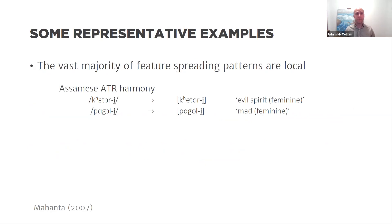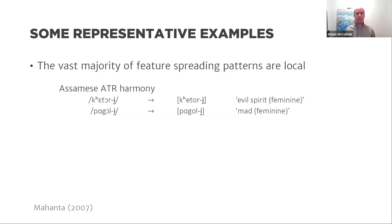The vast majority of feature spreading patterns are local. Here's an example of regressive ATR harmony from Assamese. The plus-ATR vowel /e/ in a suffix triggers leftward spreading, affecting mid vowels in the roots. In the first example, harmony spreads iteratively to the left, turning both mid minus-ATR vowels to plus-ATR. In the second example, a low vowel is unaffected — it has no harmonic counterpart in Assamese — but that does not change the effect of harmony on the following vowel.